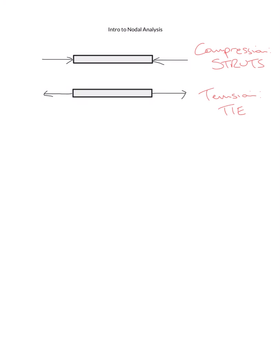If we look at a member in compression — a strut — the external forces are pushing in on it. For nodal analysis we're analyzing the internal forces, so what force is acting in that member. If we've got a strut in compression, the internal forces must push back out — every force has an equal and opposite reaction. So the internal forces push towards the nodes to balance the compressive forces. Same for tension: the external forces pull out, so the internal forces pull away from the nodes to keep the structure steady.